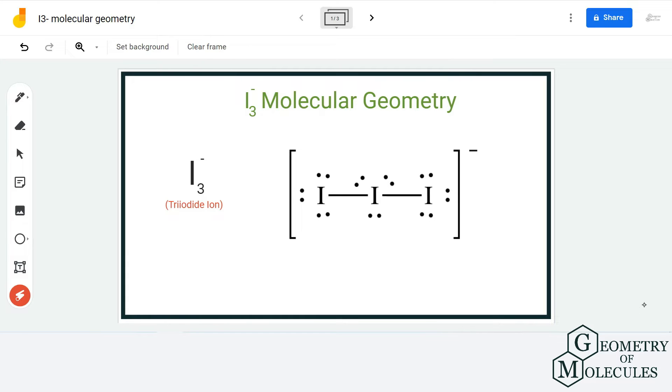To determine its molecular geometry, we are first going to look at its Lewis structure, followed by its shape, and then we are also going to use the AX notation method to find out the molecular geometry.